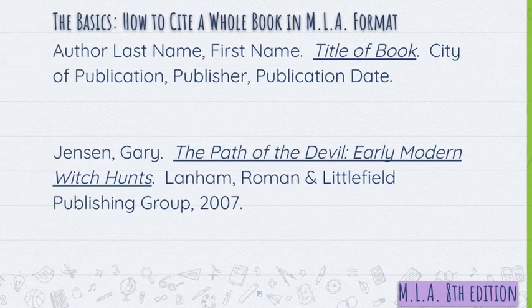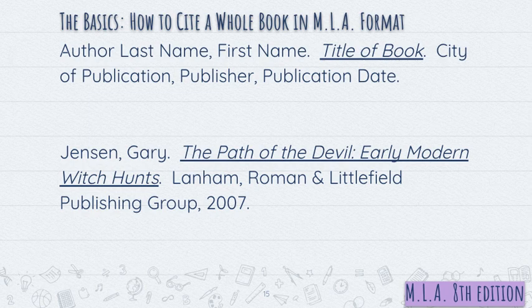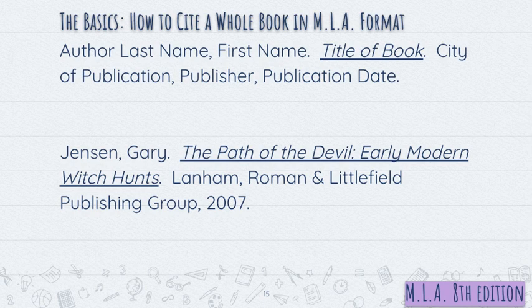So once I have all of that information, I can, if I'm going to cite this whole book, just plug that information into the format we just discussed. So I have: Jensen, comma, Gary, period, The Path of the Devil: Early Modern Witch Hunts in italics, period. And then Lanham — that's the city of publication — comma, Roman and Littlefield Publishing Group, the publisher, comma, and 2007, period. I cited this as if it were a book physically found in the library. Just remember there's a slightly different format for citing an e-book, so make sure you know the distinction between the two.